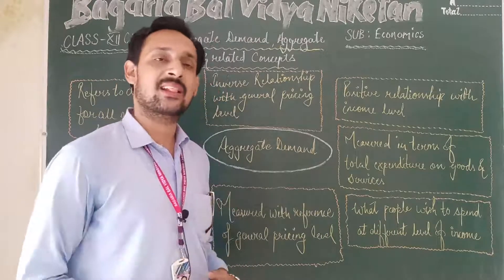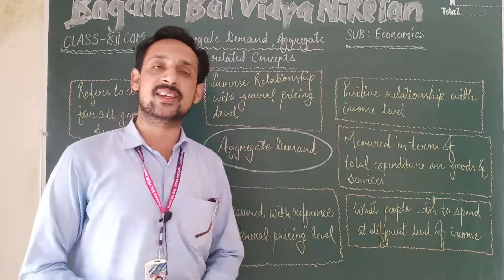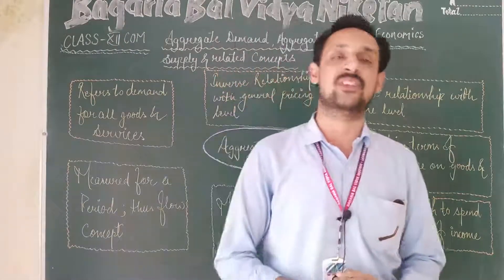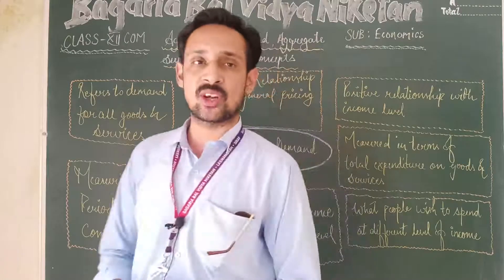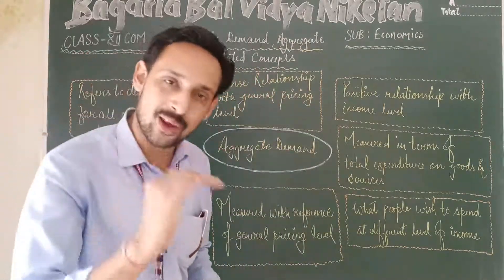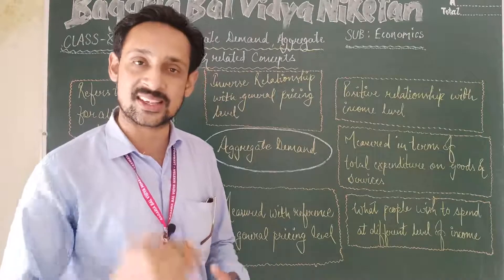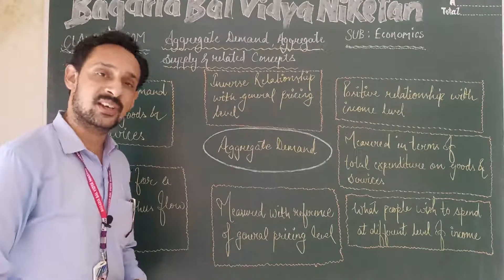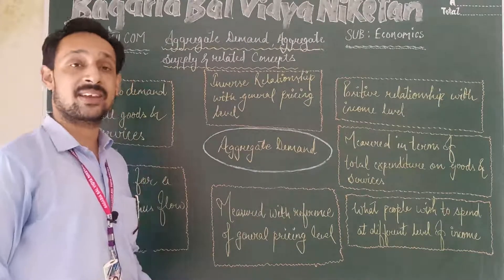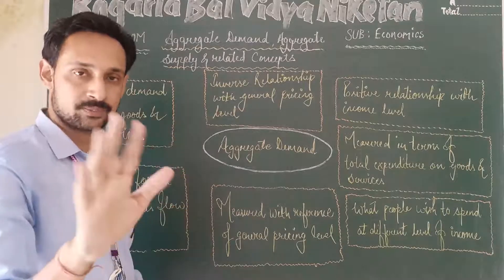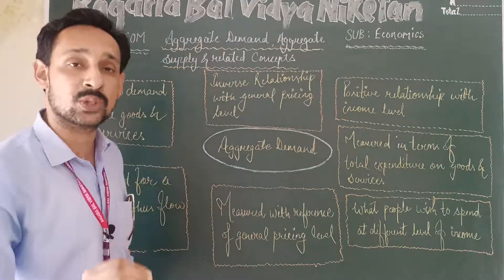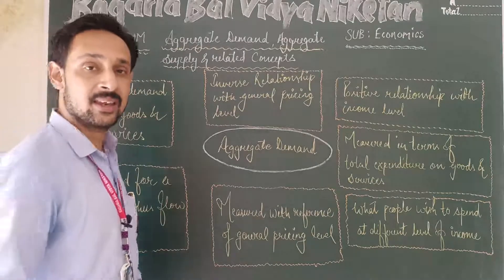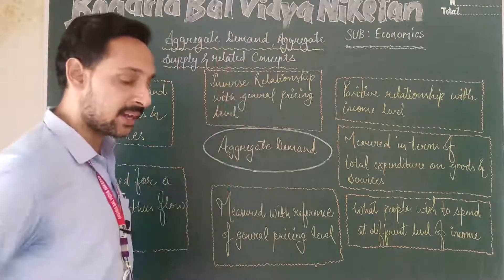When comparing aggregate demand with prices — in relation to inflation — when inflation rises, general demand falls, and when inflation decreases, general demand increases. This means there is an inverse relationship between the general pricing level and aggregate demand. As a result, the AD curve slopes downward because of this inverse relationship between aggregate demand and the general pricing level.